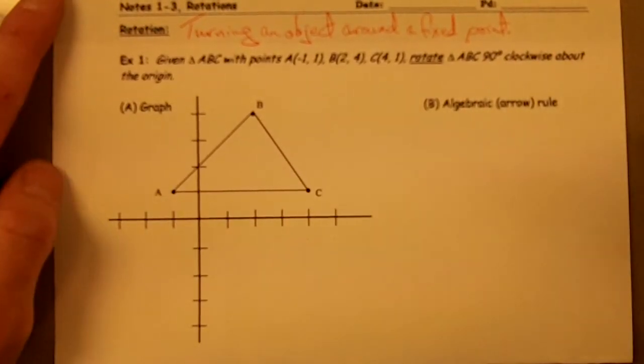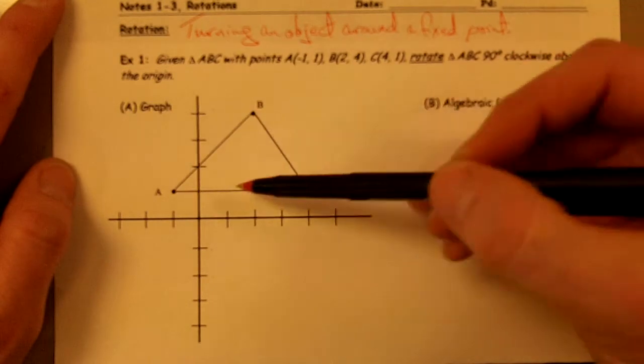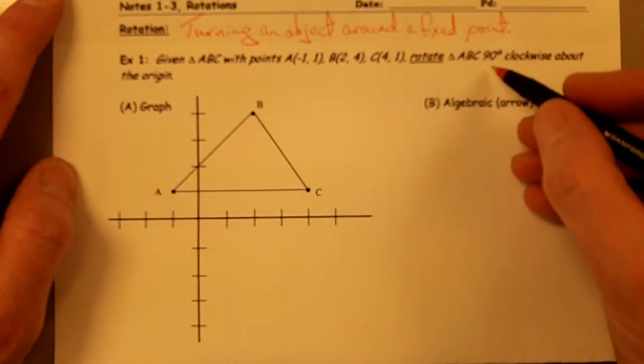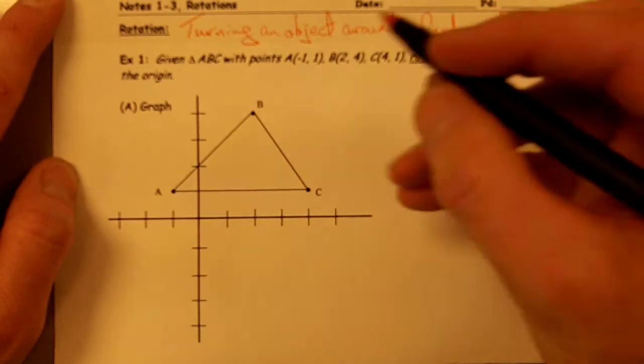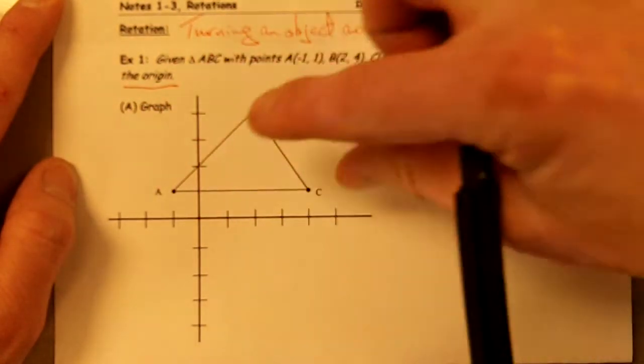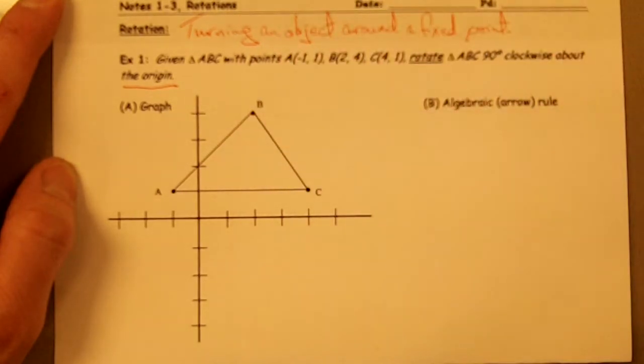So let's take a look at this example, number one, in your notes. We've got this triangle ABC, and we want to rotate triangle ABC 90 degrees clockwise about the origin. So the origin, this is our fixed point, and we want to rotate this triangle around the origin.